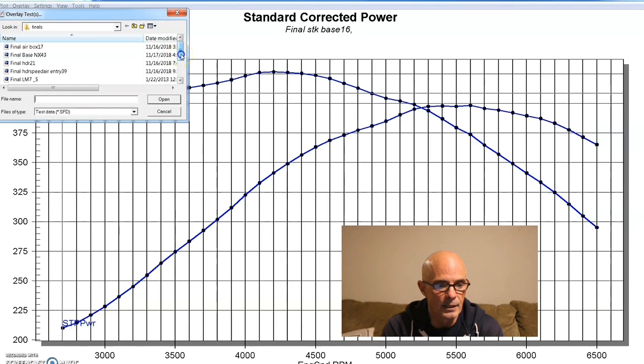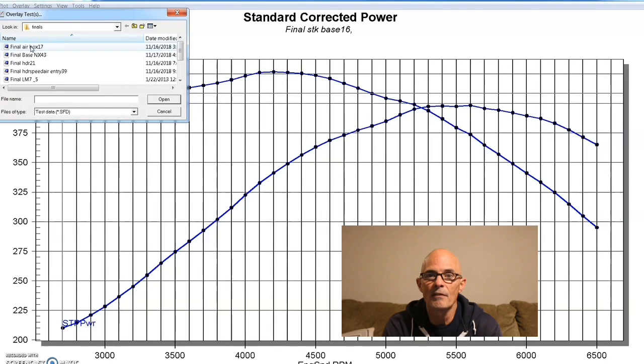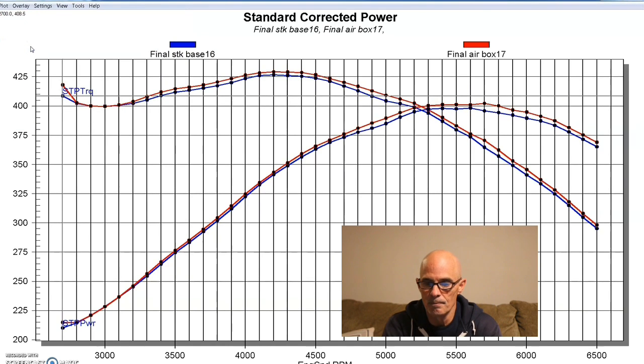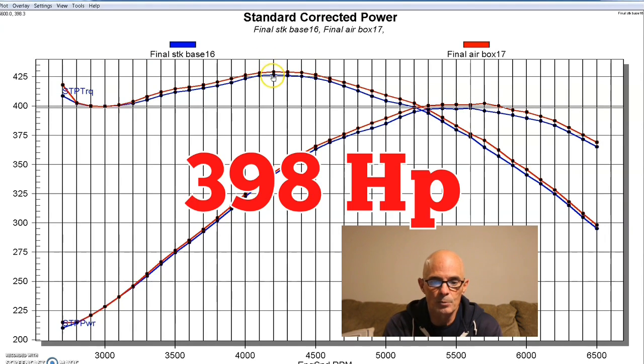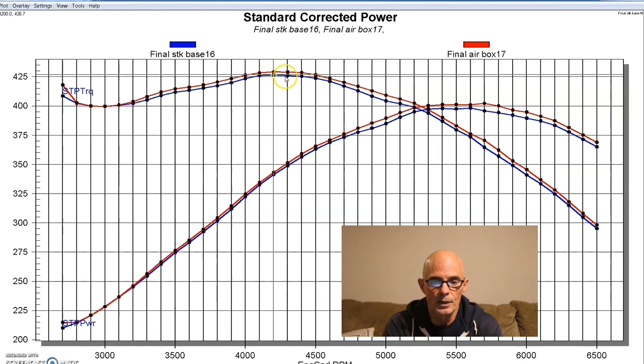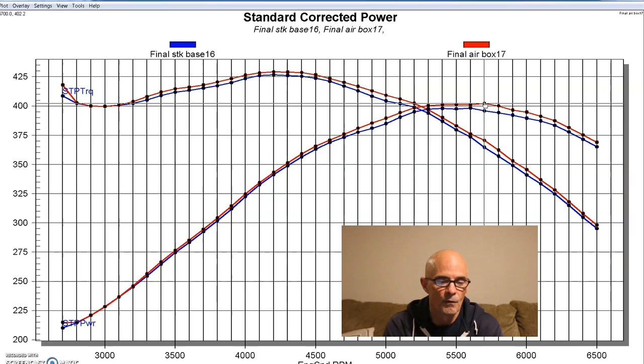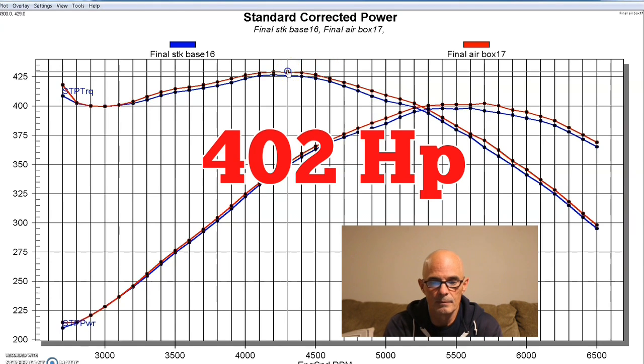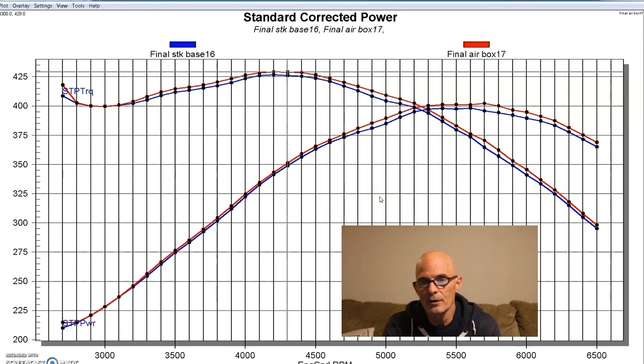First thing we did was try some modifications to the airbox. We basically disassembled the airbox and took the bottom off, just kind of made it an open deal to see how much the airbox is restricting the power. And you can see we didn't change very much. We went from 398 horsepower and 427 foot-pounds of torque up to 402 horsepower and 429 foot-pounds of torque. So not huge gains from the air intake.